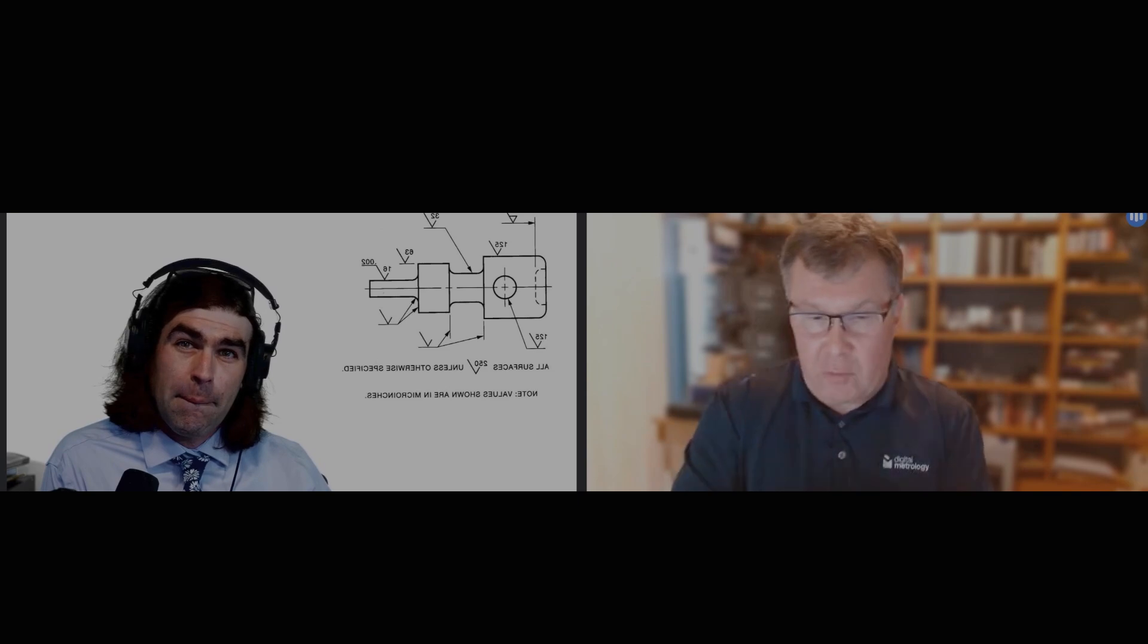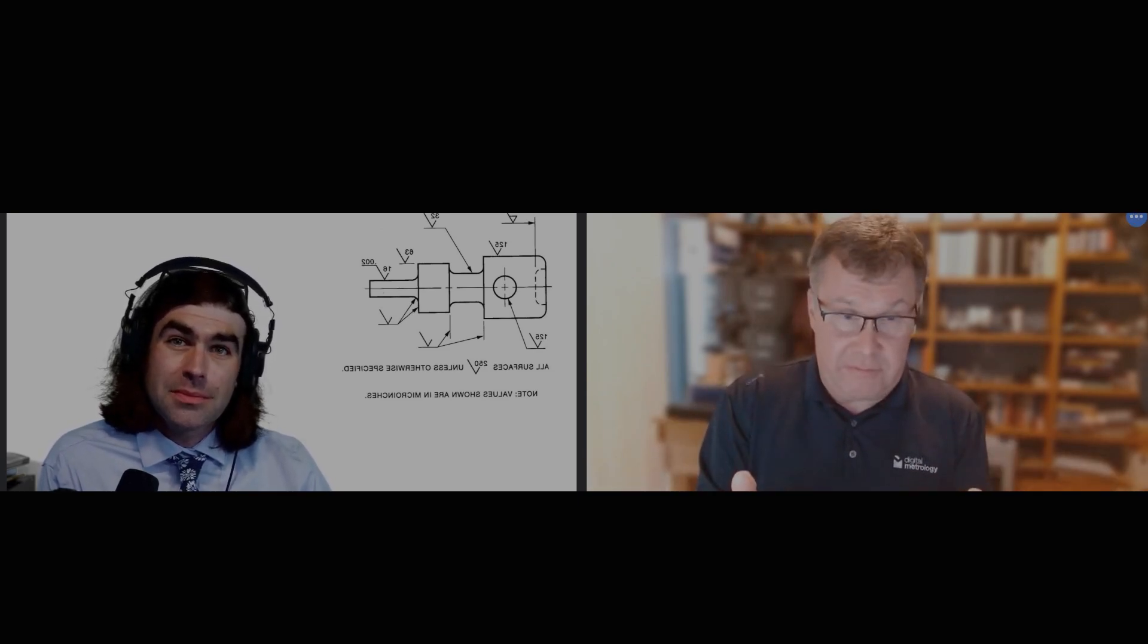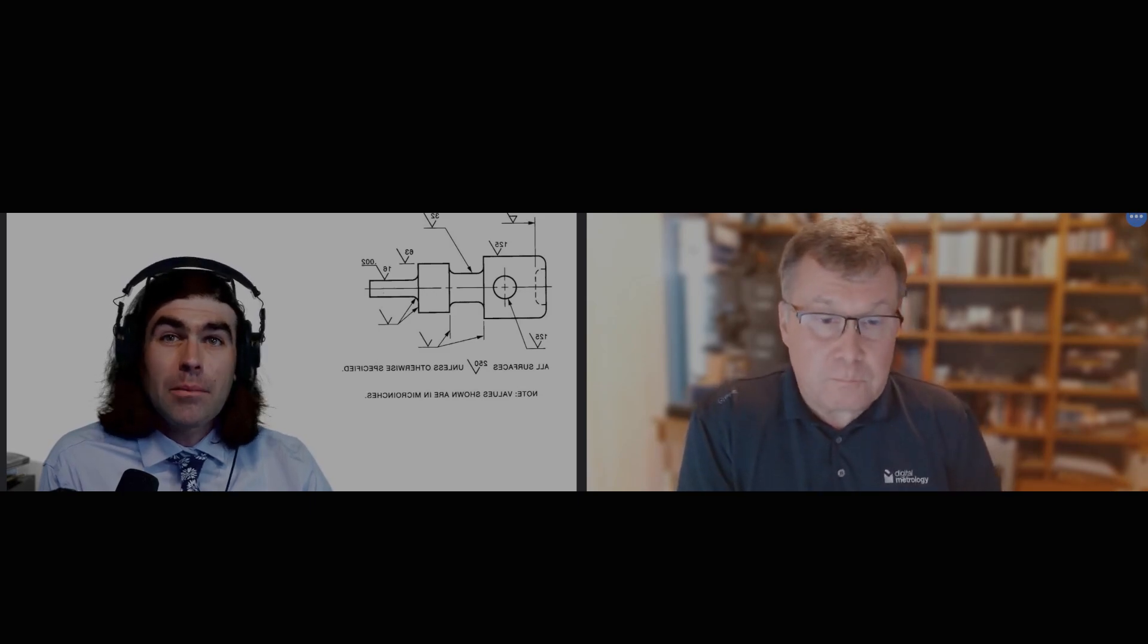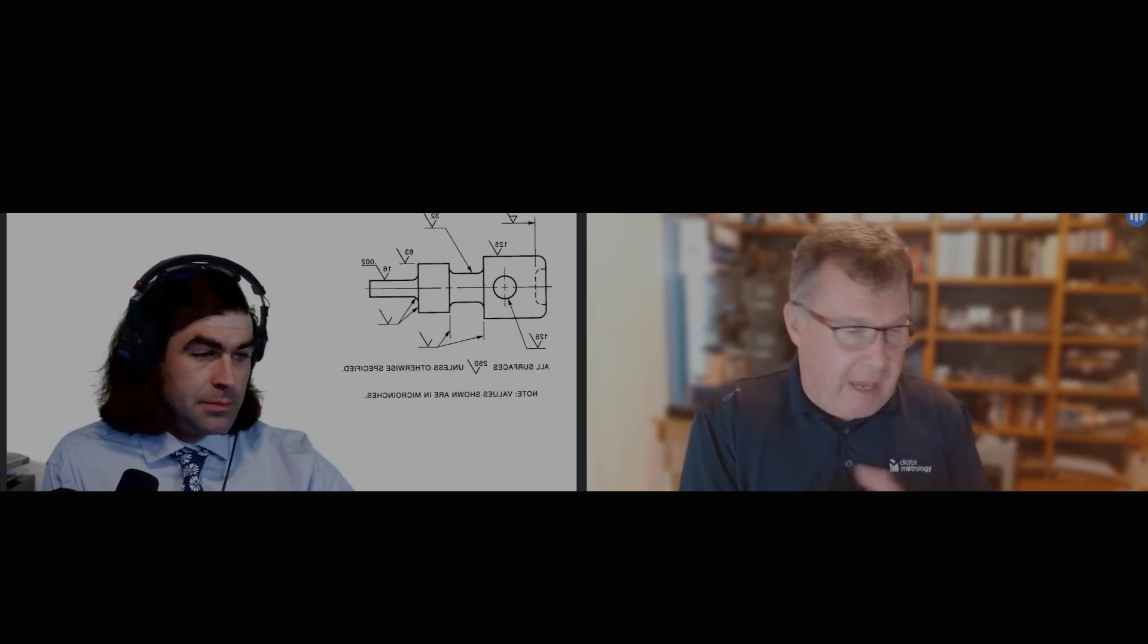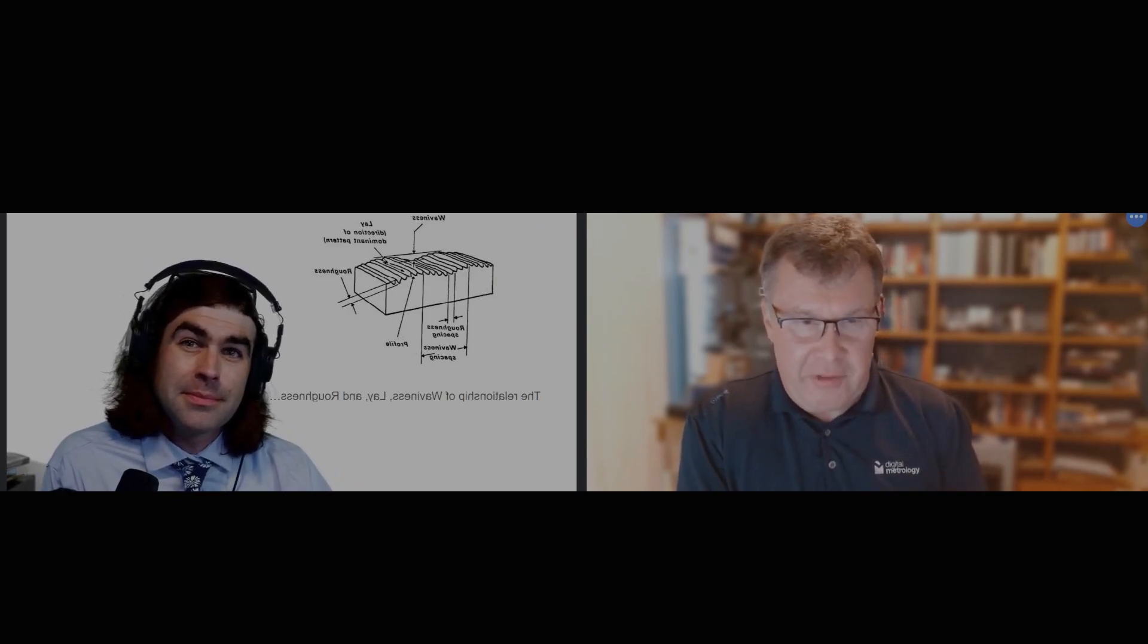That's the wavelength where roughness ends and waviness begins. It's about the thickness of your thumbnail - anything wider than that is waviness, not roughness. In metric, that's 0.8 millimeters.